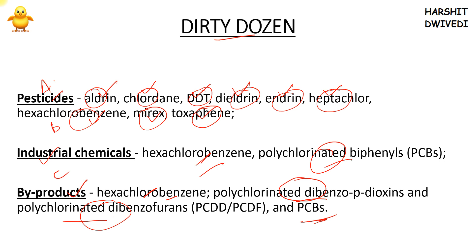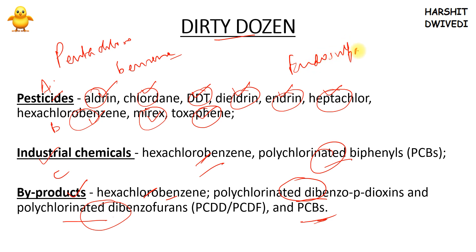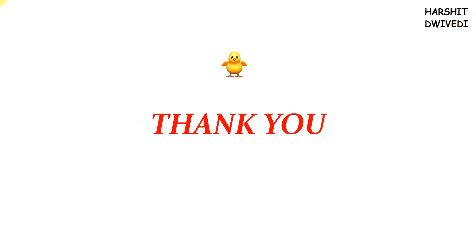In May 2009, at the fourth Conference of Parties, additional chemicals were declared, including alpha-hexachlorocyclohexane, beta-hexachlorocyclohexane, lindane, and pentachlorobenzene. Then at the fifth Conference of Parties in May 2011, endosulfan was also banned. In 2013, hexabromocyclododecane was banned. Slowly the list has grown to around 26 chemicals completely banned under the Stockholm Convention on Persistent Organic Pollutants.